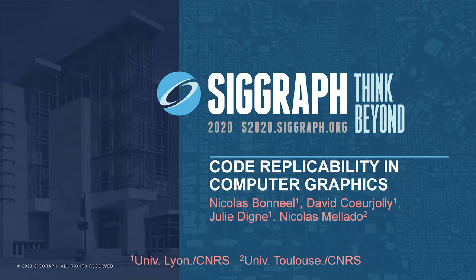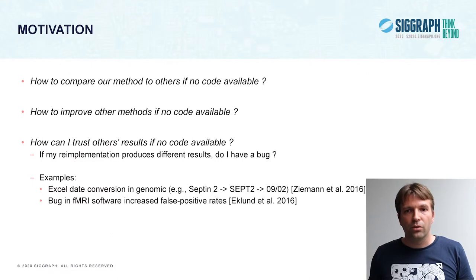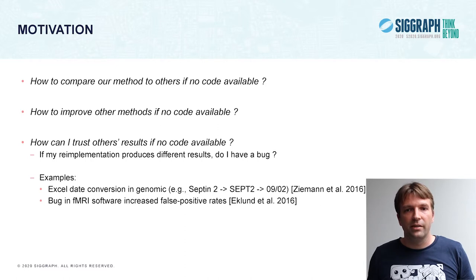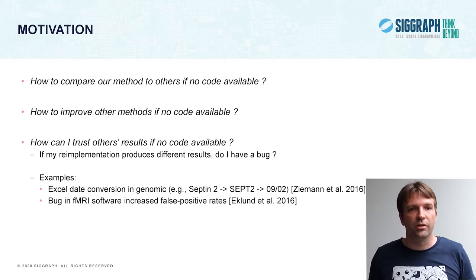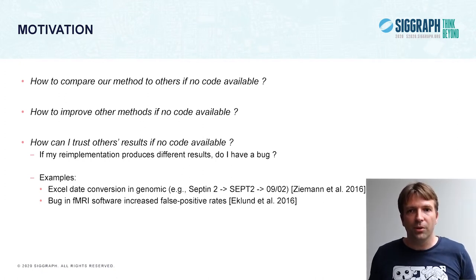Hi, I will be presenting our paper on code replicability in computer graphics. We have three main motivations for our paper. First, when we do research, we need to compare our methods to others. And how can we do that if the code for other methods is not available? Are we supposed to reimplement everything and spend months doing that?